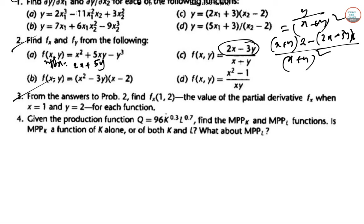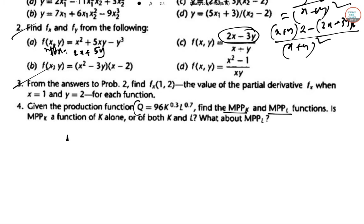These are basic derivatives. Next you can do this also just putting the values. Now from question 4, there is a little bit good thing happening. So Q is this, MPPK and MPPL, so marginal physical productivity of capital.